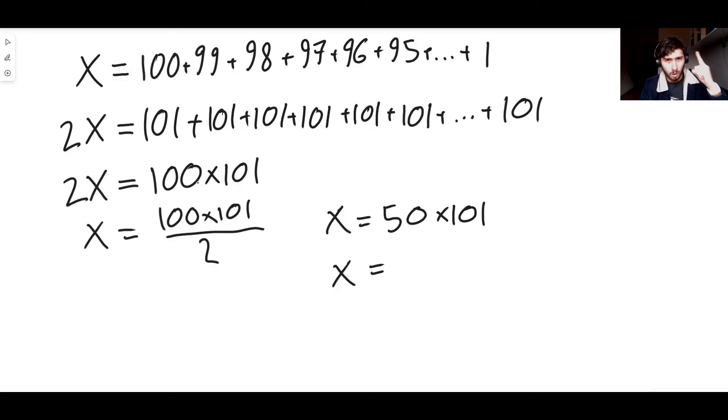Isn't that genius? So the answer to 1 plus 2 plus 3 plus 4 all the way up to 100 is 5050. And Gauss allegedly did this in a matter of seconds, which absolutely blew his teacher's mind. I think personally that is absolutely awesome.